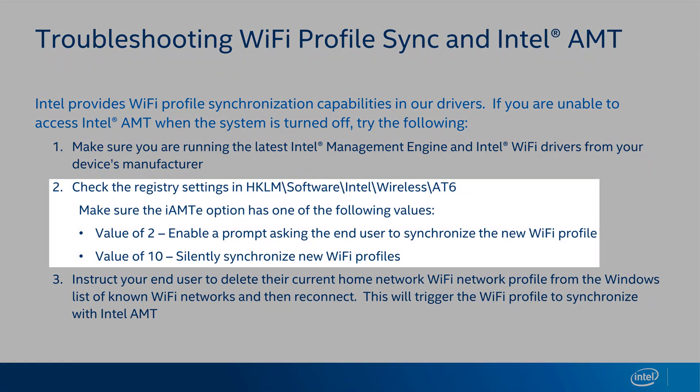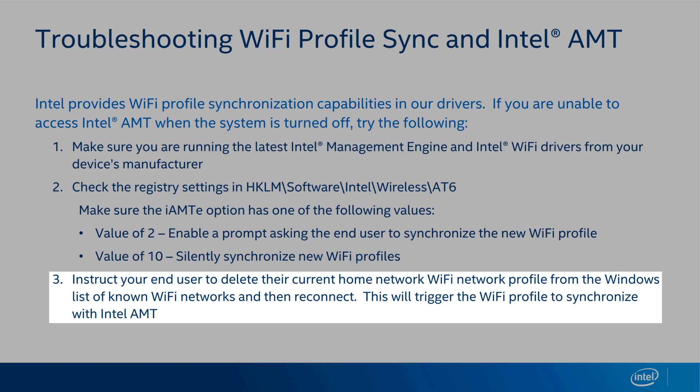Next, check the registry and look in HKEY Local Machine, Software, Intel, Wireless, AT6. There should be an option in there called IAMTE. It can have a number of values, but the ones we suggest using are one of two. If you set a value of two, it will enable a prompt that asks the end user if they would like to synchronize the Wi-Fi profile they just created in Windows with the management engine. That's great for debugging purposes, but not necessarily great for production usage. We also have a value of 10, which will silently synchronize new Wi-Fi profiles without prompting the end user. Once you've made these changes in the registry, instruct your end users to delete any Wi-Fi profiles in Windows that they want synchronized, and then re-add those Wi-Fi profiles so that the synchronization process will be triggered with Intel AMT.